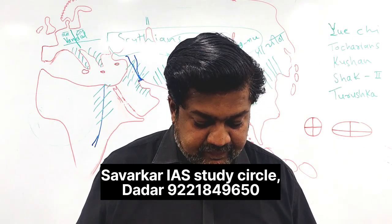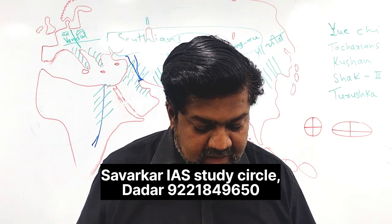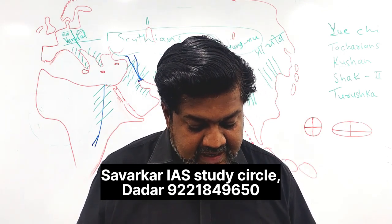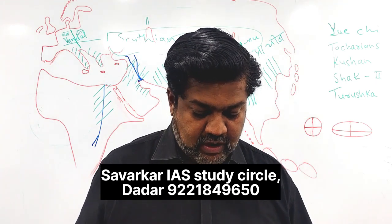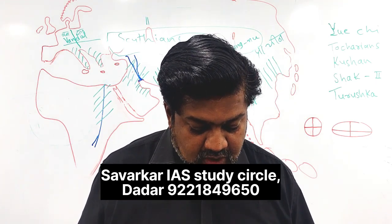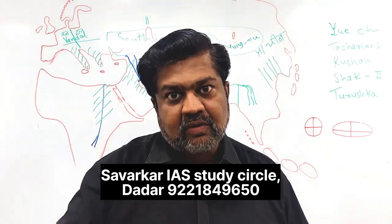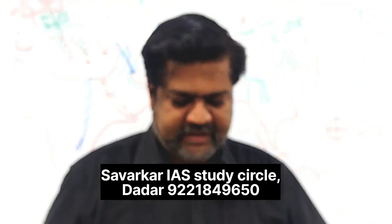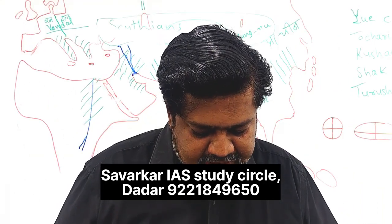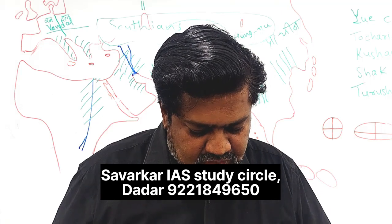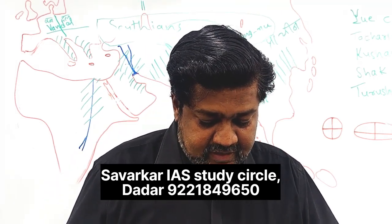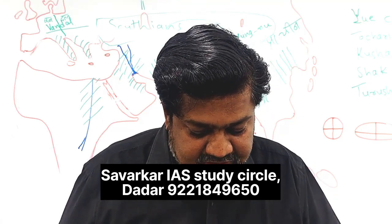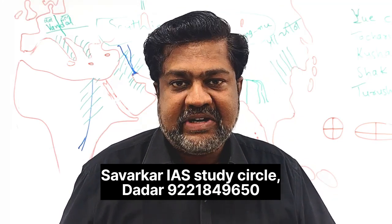It designated the Governor General of India and the provincial governors as constitutional heads of the state. Since governors were appointed by the King, this was mandatory. They were made to act on the advice of the respective council of ministers in all matters.